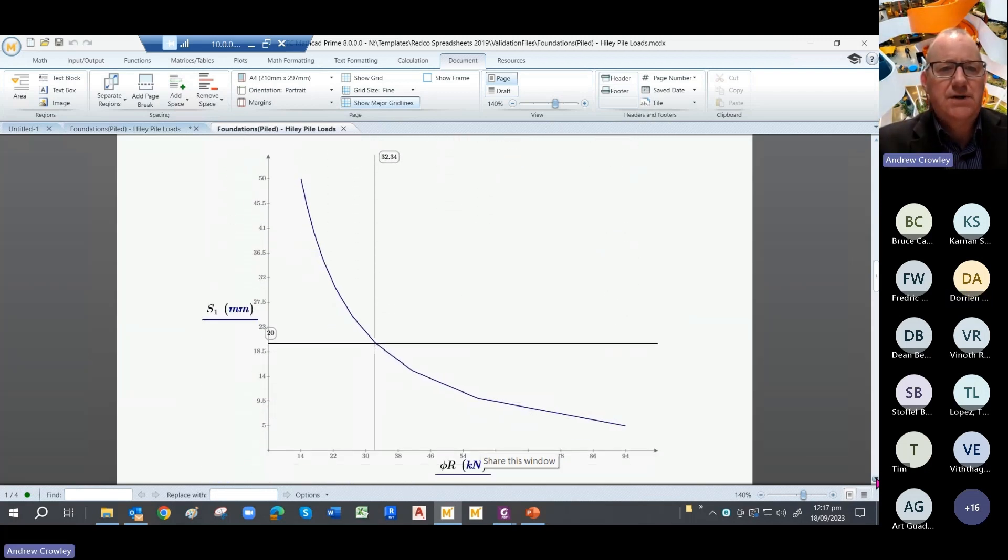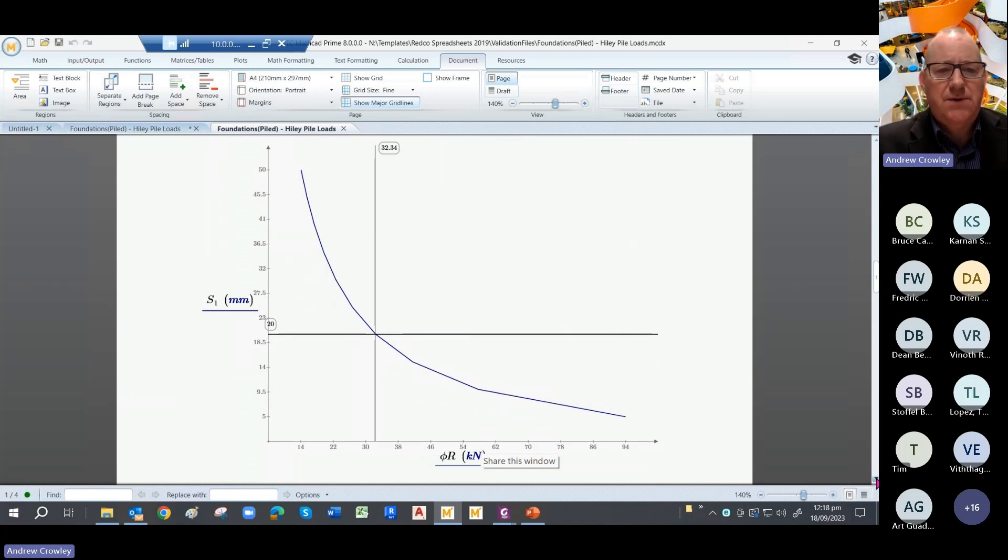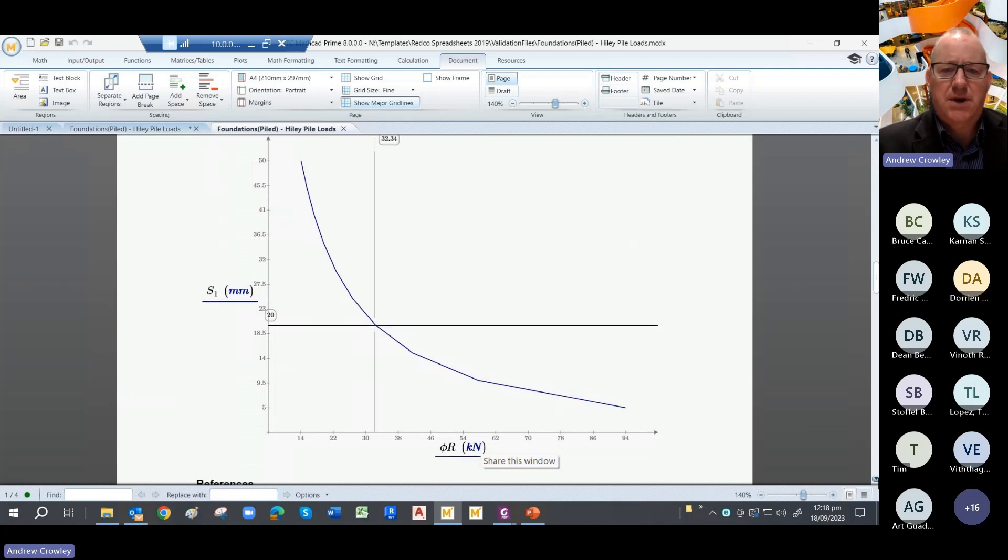So the plot function in MathCAD allows you to plot this diagram of your set versus your resistance. And I've put on the two lines there to show you where the limitations are. So when you're in this area, you're good. If you're in this area, you really need to be calculating the pile again with the revised values based on the stress in the pile.